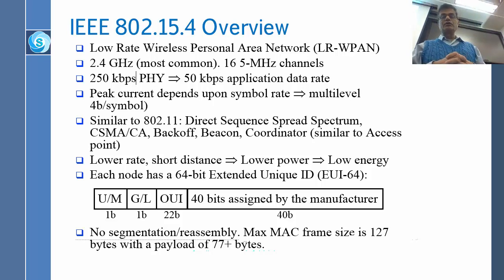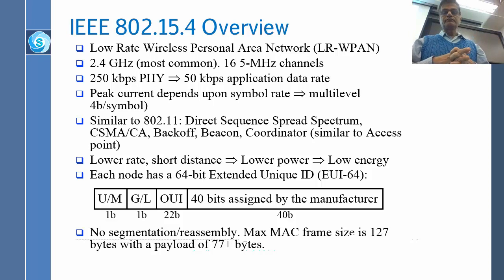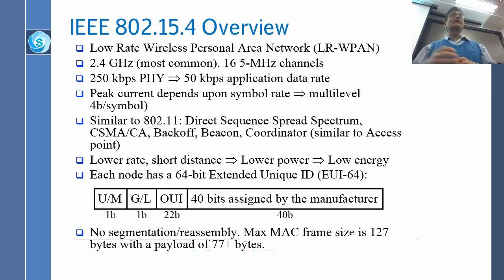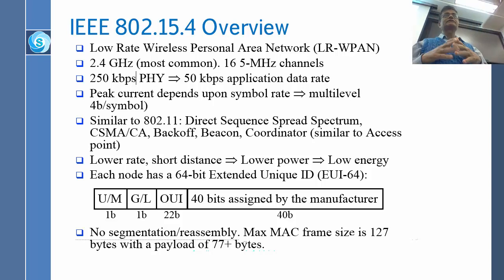Lower rate and short distance means low power, low energy. Every node has a 64-bit address. Most devices have a 48-bit IEEE 802 address — also called Ethernet address or MAC address. But now they have to have a 64-bit address, and that 64-bit address is called EUI-64. EUI stands for Extended Unique ID, and unique ID means it is globally unique. Just like the MAC address, no other device will have that EUI address anywhere in the world.